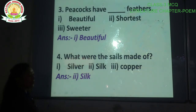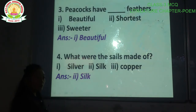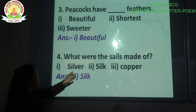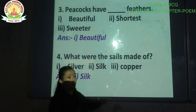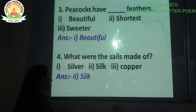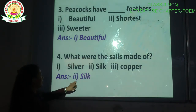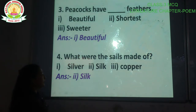Question number 4: What were the sails made of? Options are: silver, silk, copper. The correct answer is option number 2 — silk. The sails were made of silk.